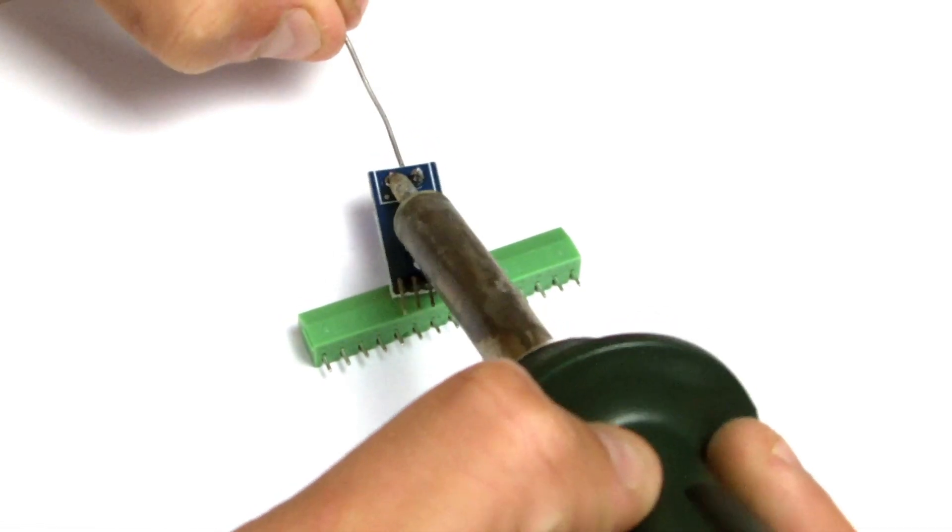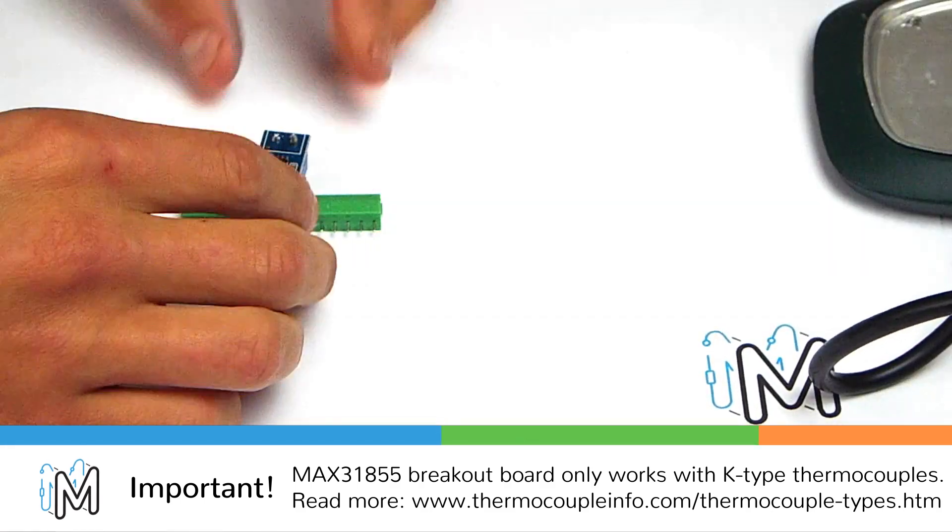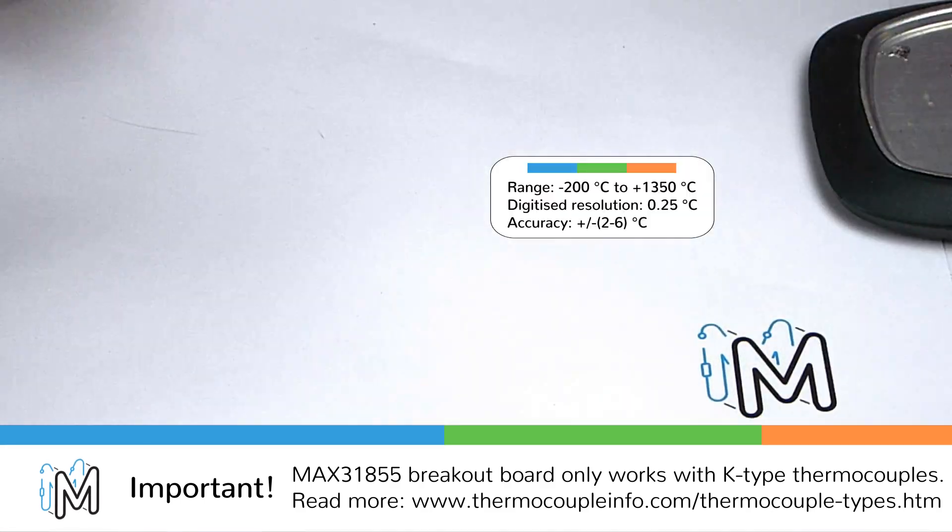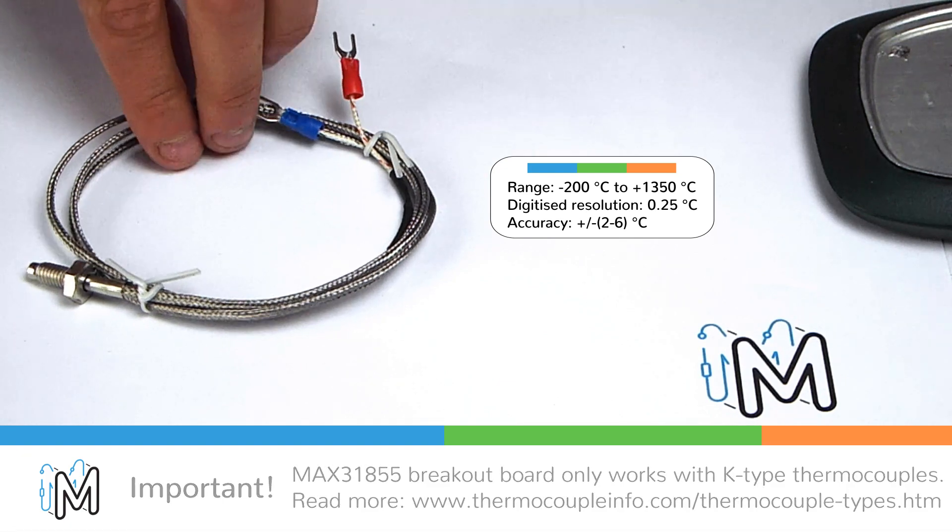The MAX 31855k thermocouple amplifier breakout board only works with K type thermocouples. These thermocouples operate between minus 200 degrees Celsius and 1350 degrees Celsius with a 0.25 increment and have an accuracy of 2 to 6 degrees Celsius.